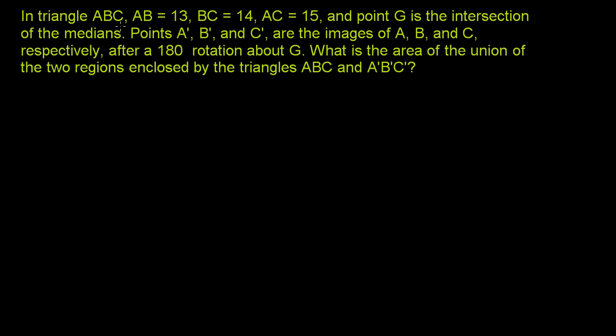In triangle ABC, AB is equal to 13, BC is equal to 14, and AC is equal to 15.